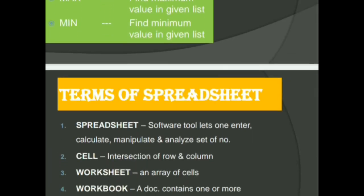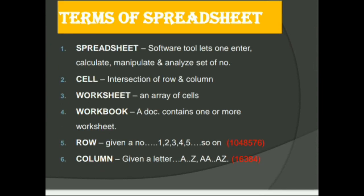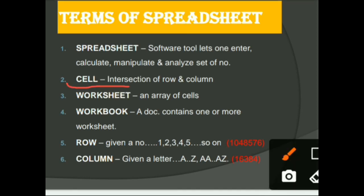Next is the terms of spreadsheet. First, what is spreadsheet? Spreadsheet is a software tool which helps you to enter data, calculate, manipulate, or analyze number of sets. Next is the cell. Cell is the intersection of row and columns. Very important question, most times in exams this question is repeated. Cell is the intersection of rows and column, is known as cell.